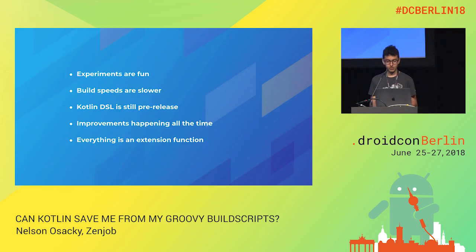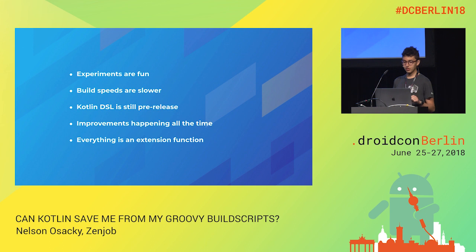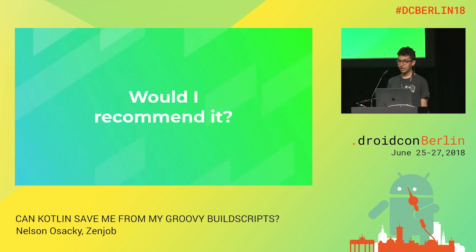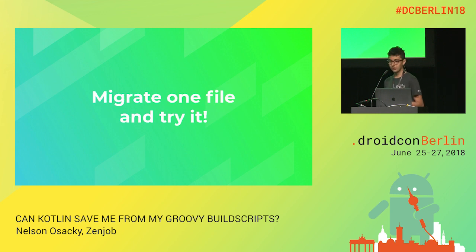That concludes the confusing part of the talk. Experimenting with stuff is fun. Moving to the Kotlin DSL will slow down your build speeds in certain cases. The Kotlin DSL hasn't reached 1.0 yet, but improvements are happening all the time and lots of new improvements are on the horizon. Everything is an extension function, and in Groovy everything is a string or a map. Would I recommend it? It depends on the size of your project and whether you're using build source. For small projects not using build source, definitely try migrating one file. For bigger projects, migrate one file and see the impact.